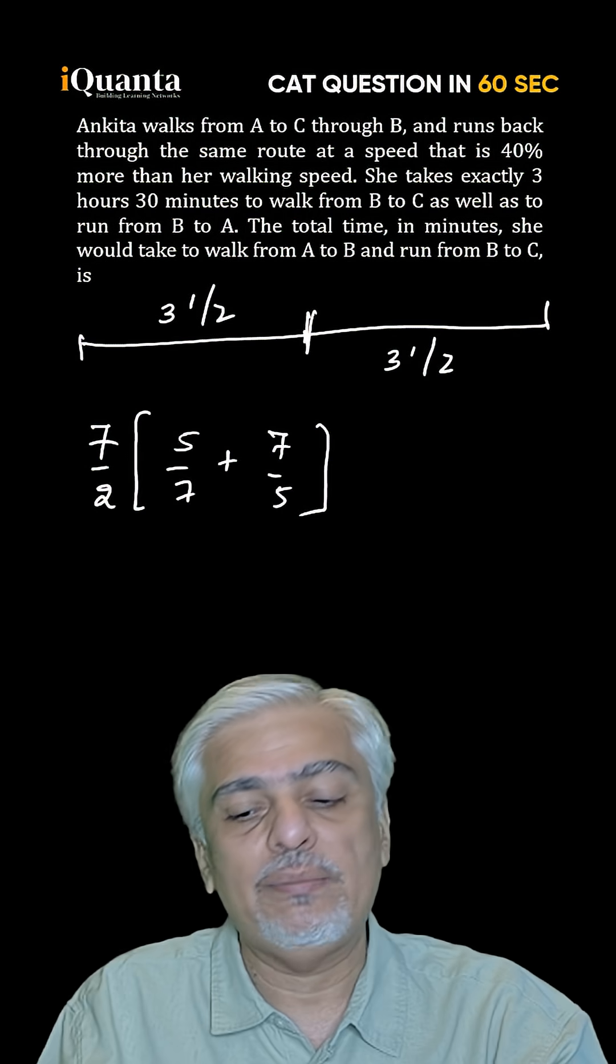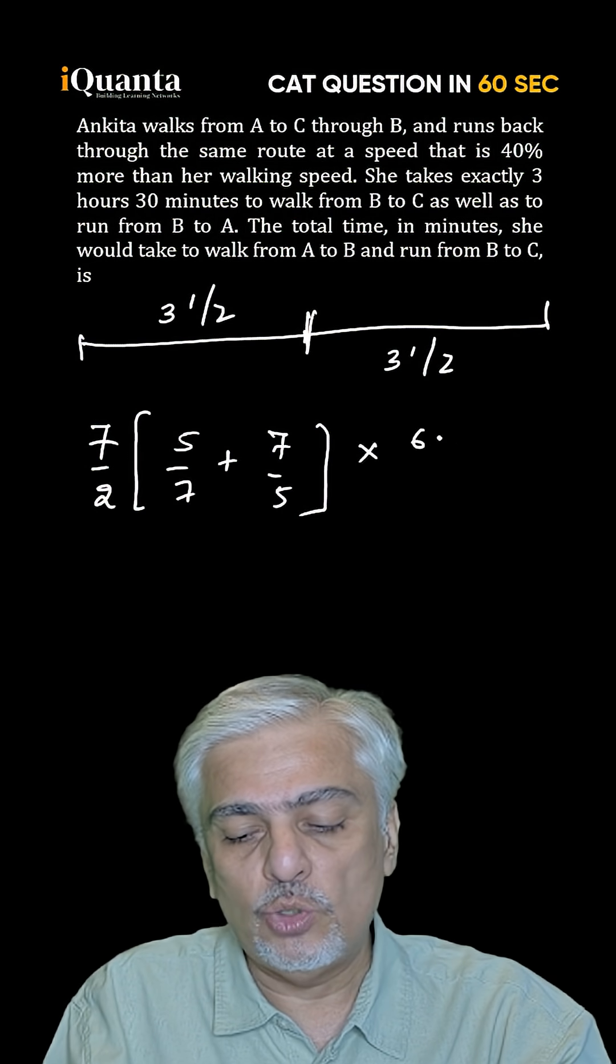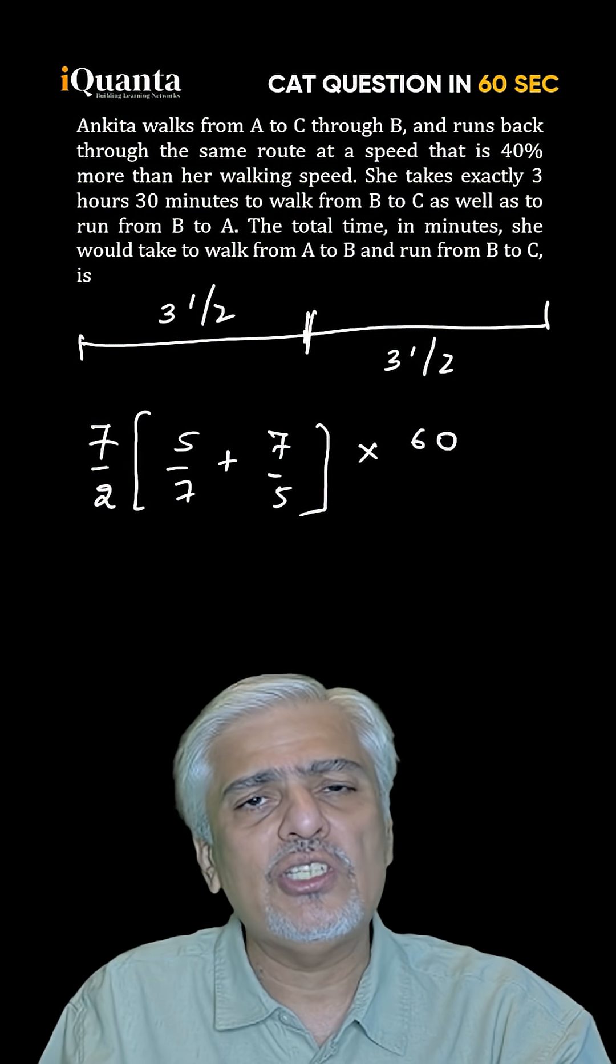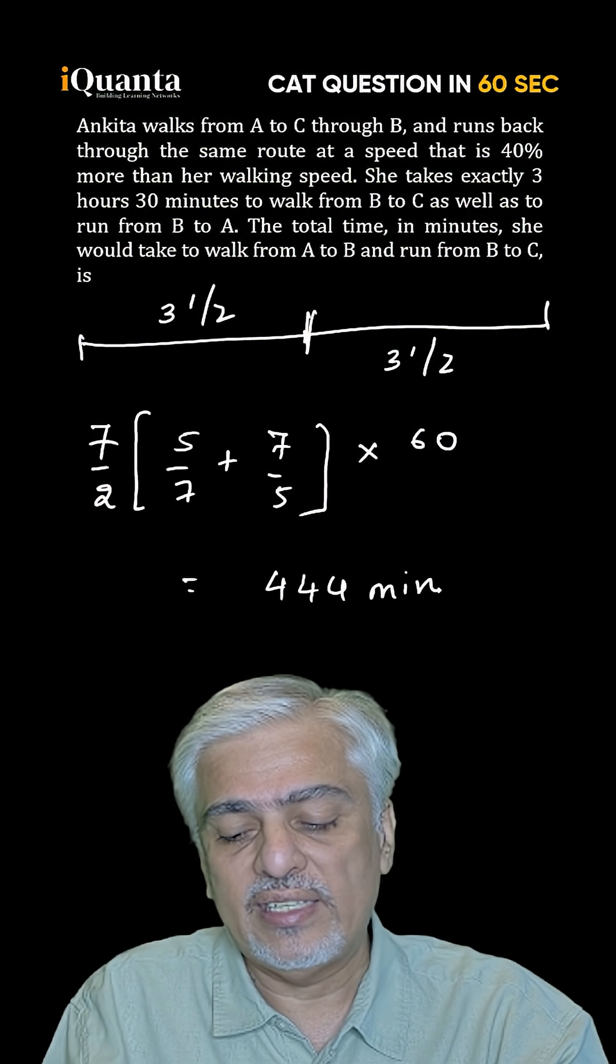So both the three by twos you're multiplying by seven by five and five by seven. Obviously take LCM, convert this to minutes. Solve this equation out which is not a very difficult part giving you 444 minutes as your final answer.